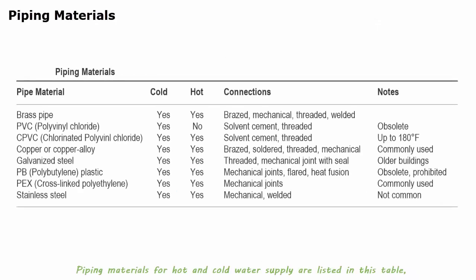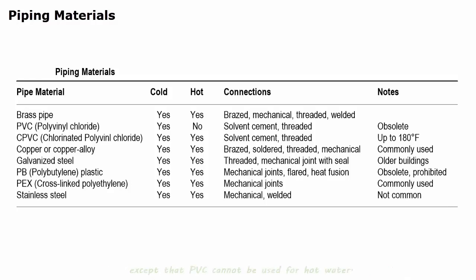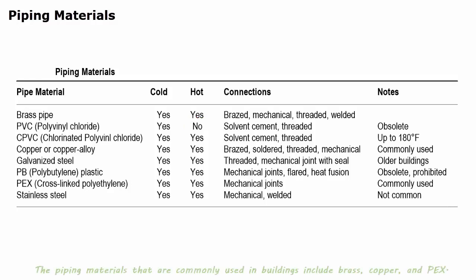Piping materials for hot and cold water supply are listed in this table, except that PVC cannot be used for hot water. The piping materials commonly used in buildings include brass, copper, and PEX.